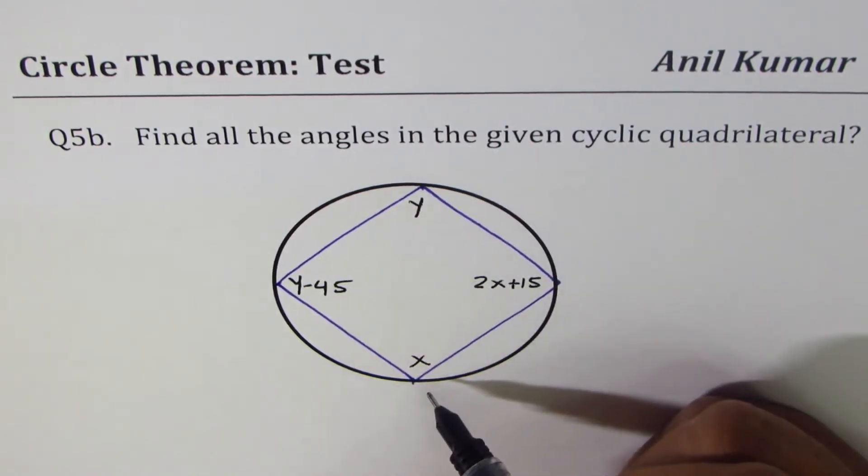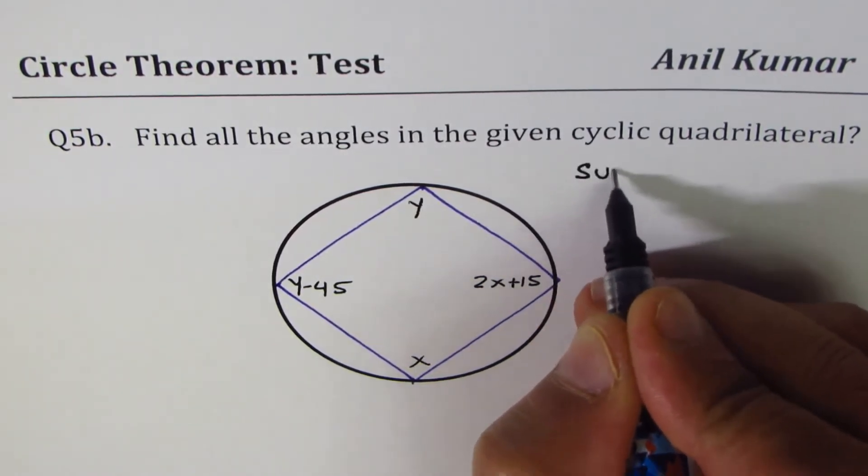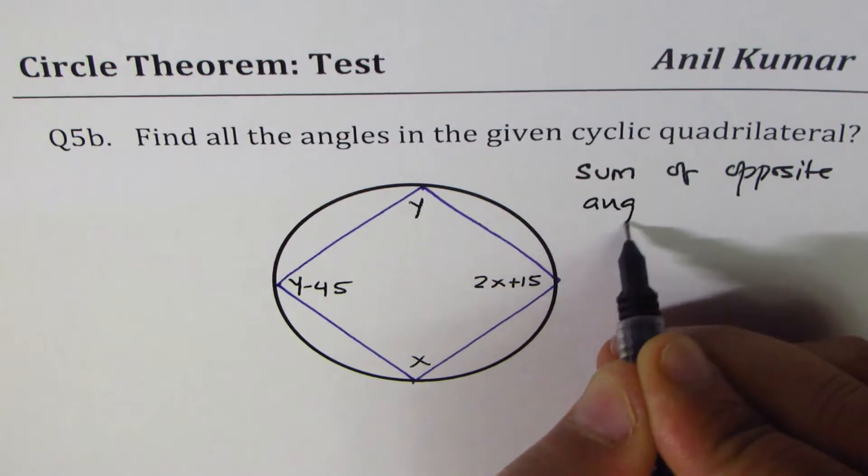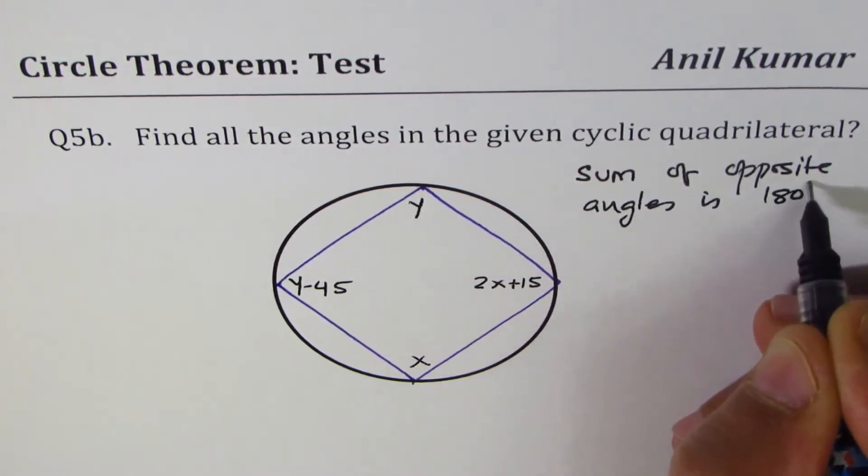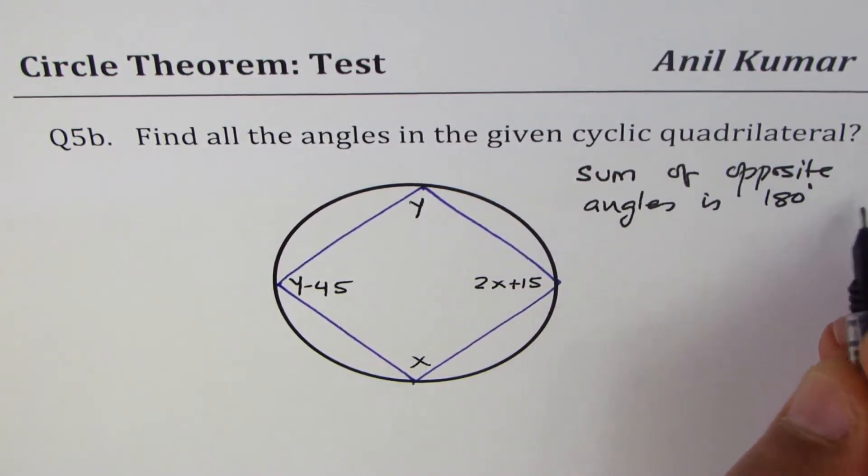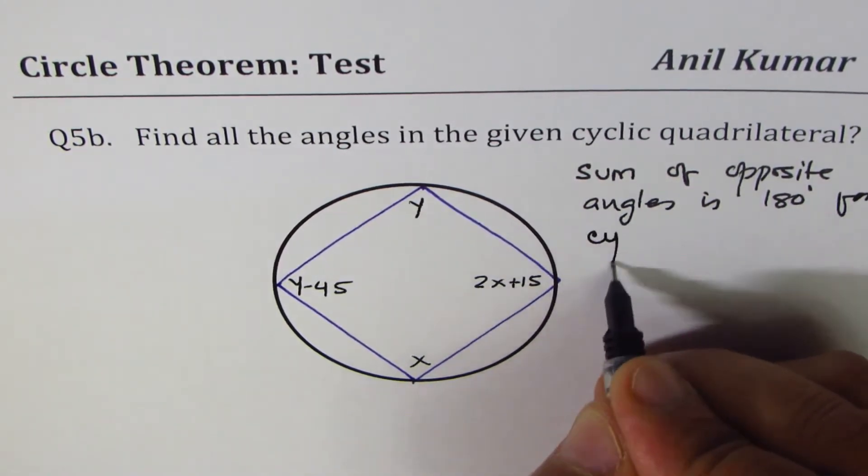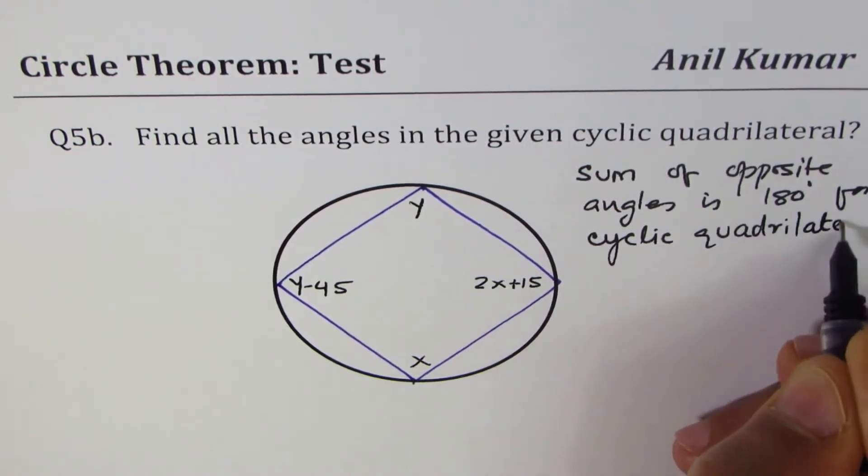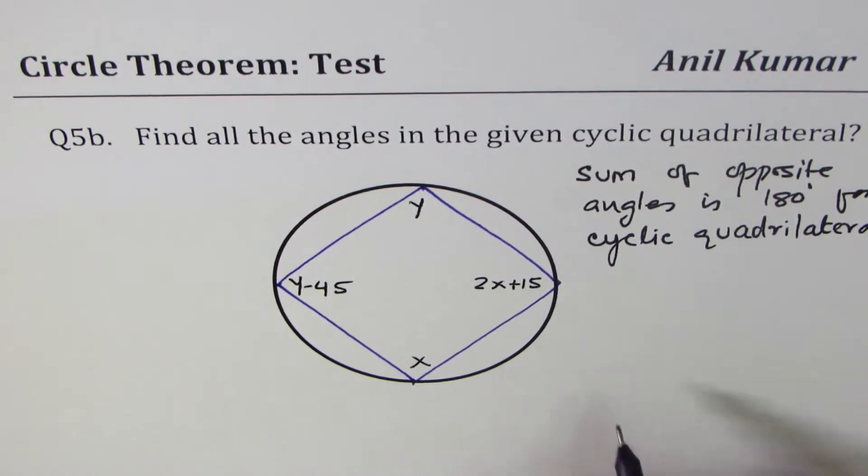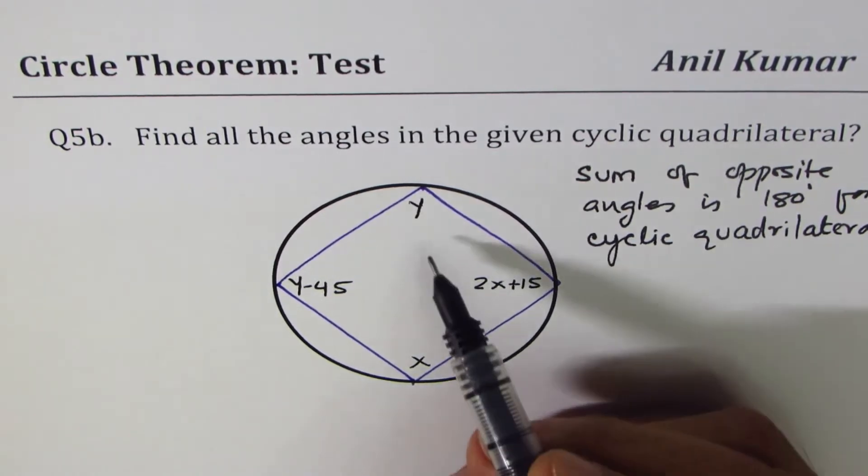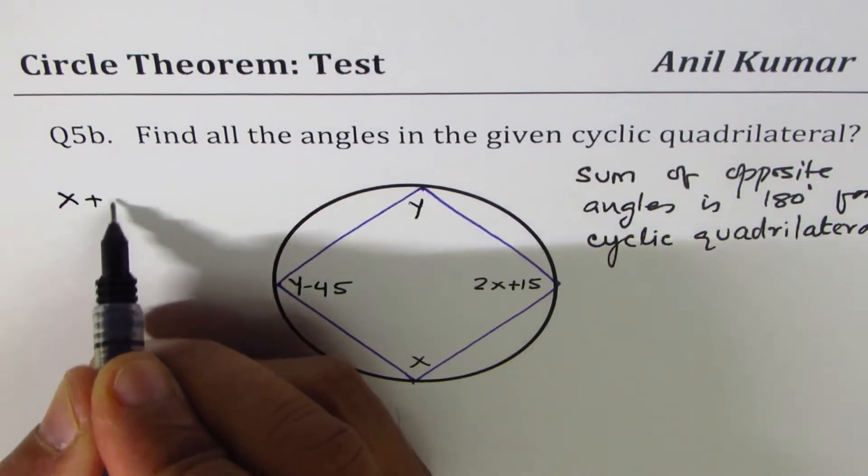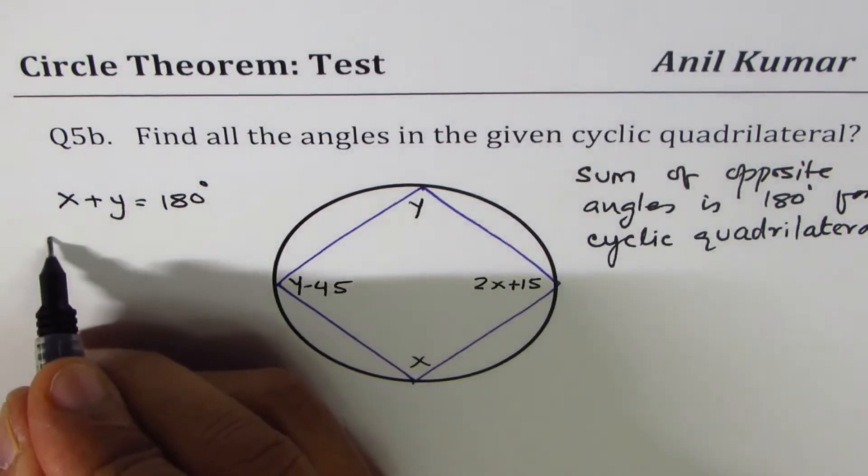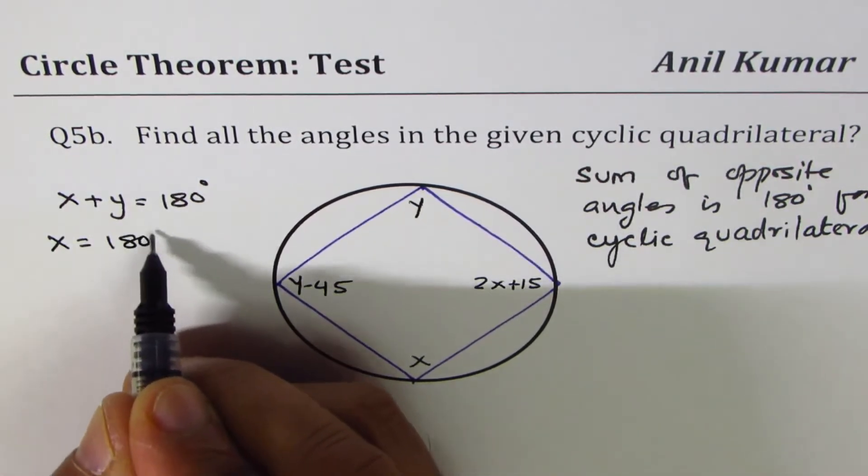So as you learn, in a cyclic quadrilateral, sum of opposite angles is 180 degrees. We'll use this property to find the solution. So we can say x plus y equals to 180 degrees, so we can write x equals to 180 degrees minus y.